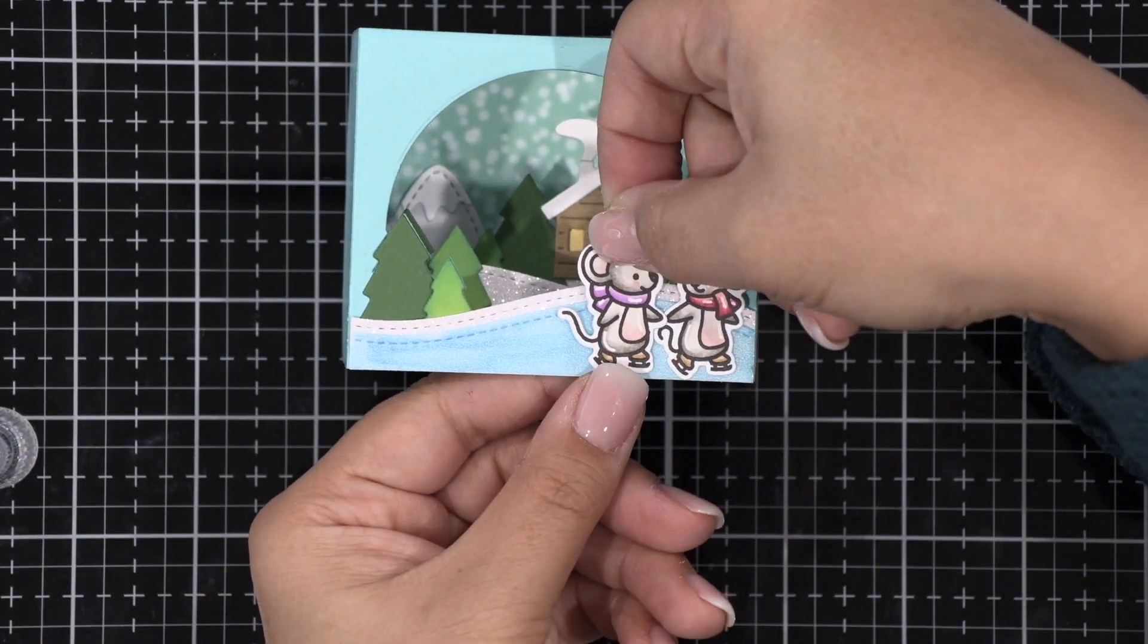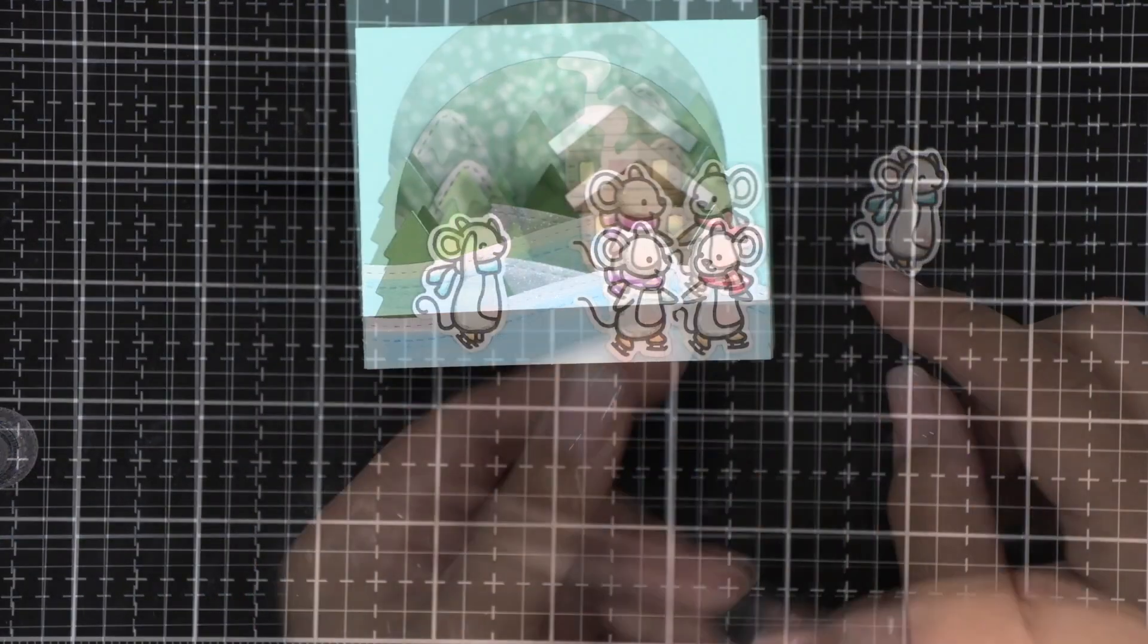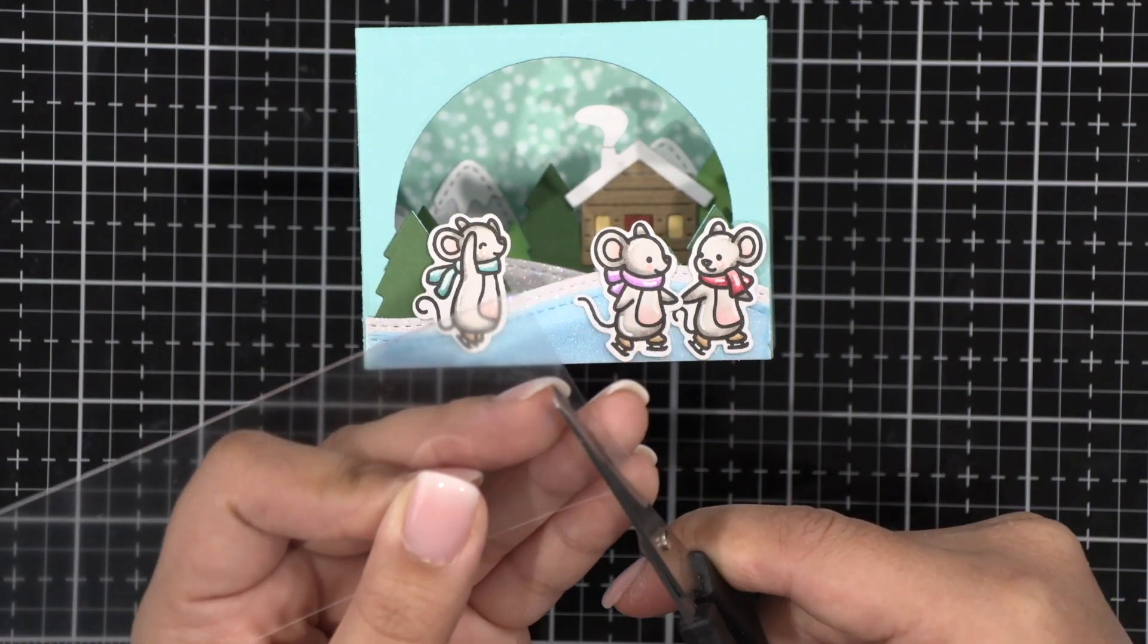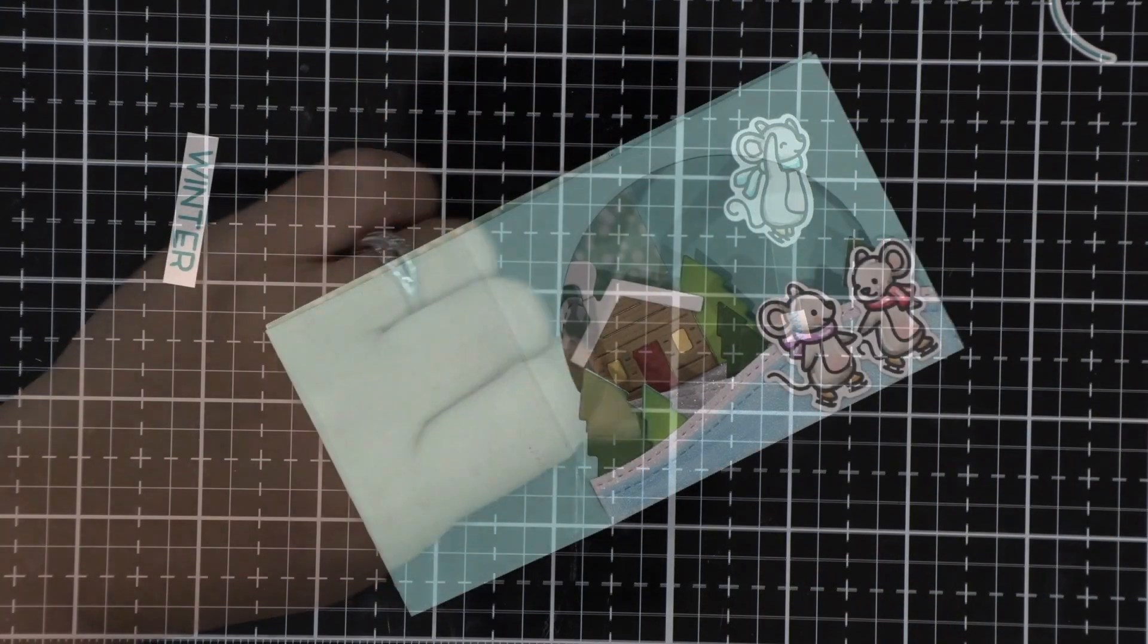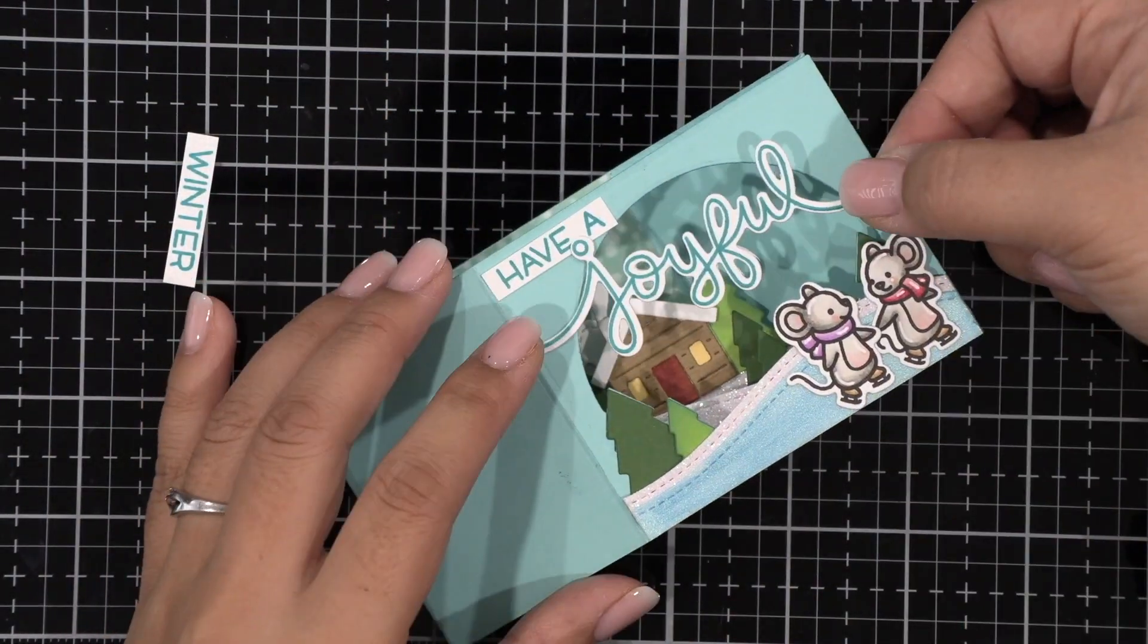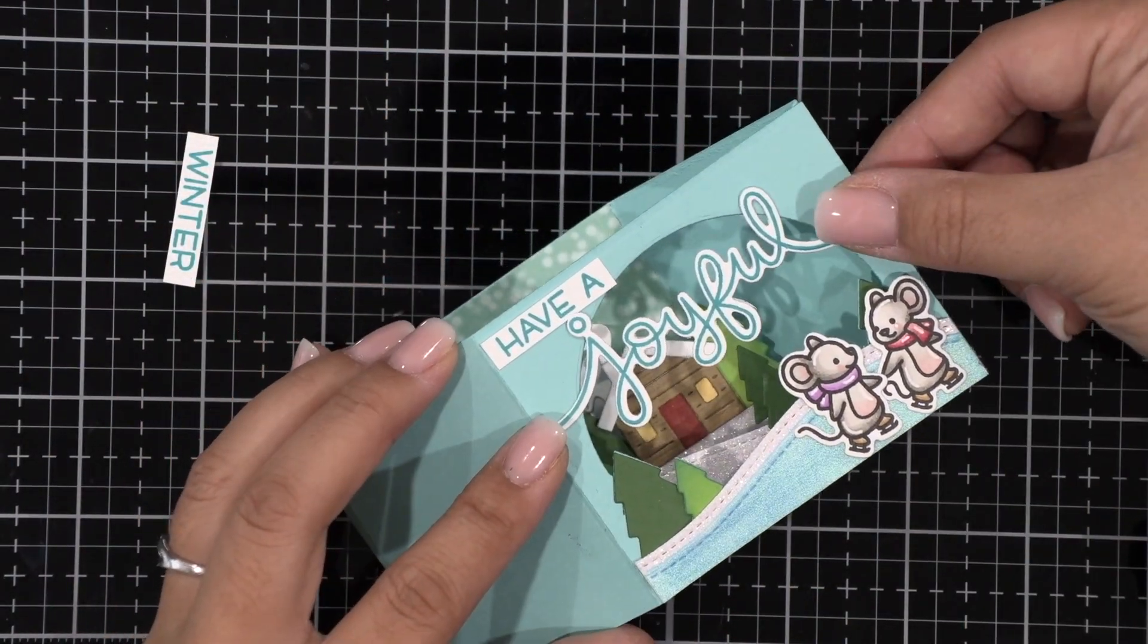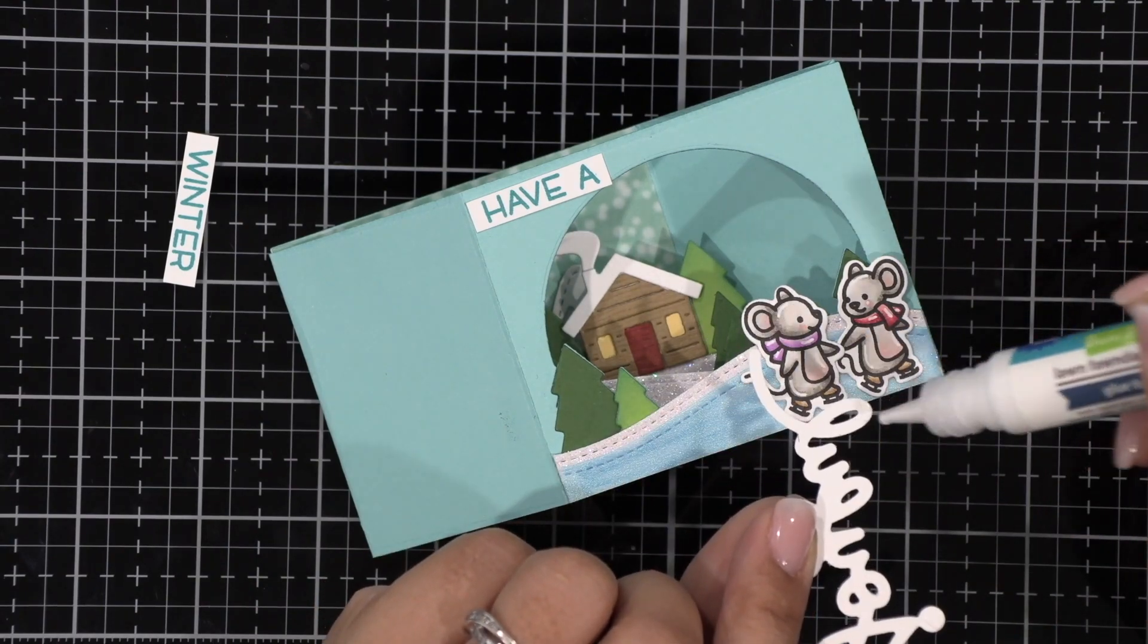All right now it's time to add my mice. I wanted the one jumping in the air to be off the ground so I'm going to cut a thin piece of acetate and then adhere him to it and then add a little adhesive to the bottom and then save him for last because I want to make sure that there's enough room for my sentiments.